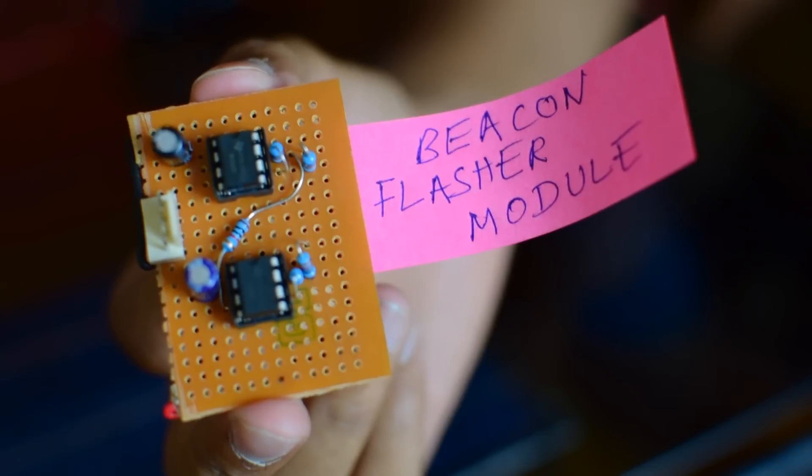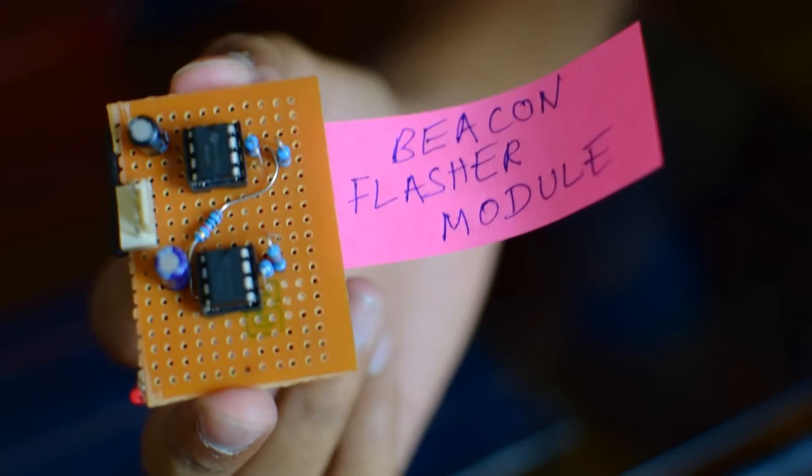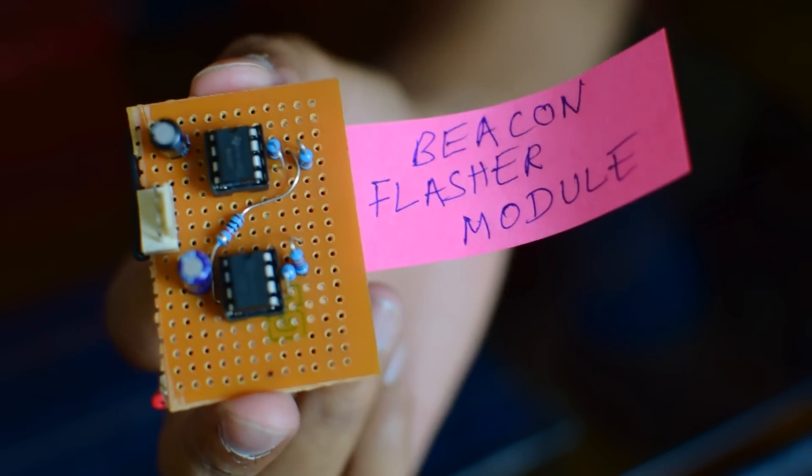This is the beacon flasher module. I have used 2 555 ICs and I have used them as astable multivibrators. I will explain clearly with the help of a schematic.